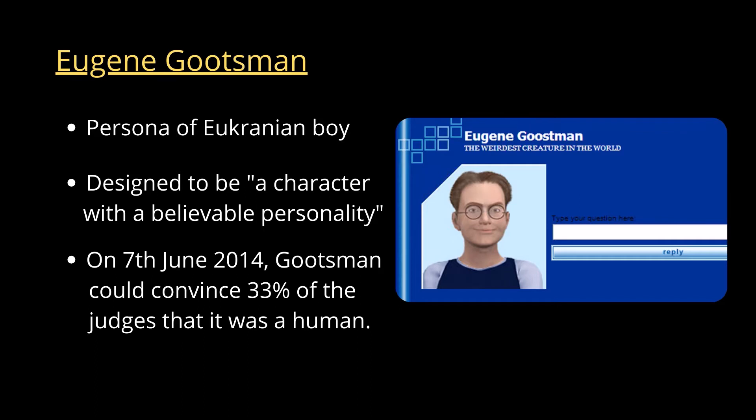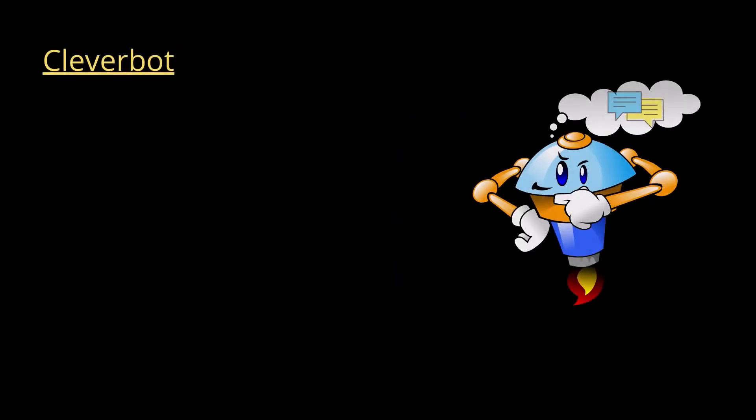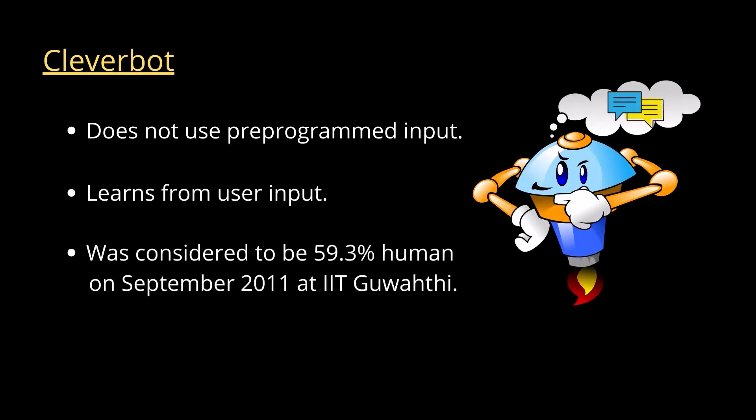Some programs like Cleverbot took a totally different approach by statistically analyzing large amounts of data and coming up with the best responses. Unlike other chatbots, Cleverbot's responses are not pre-programmed — it learns from previous inputs and responds to an input by finding out how a human had responded to it when asked earlier.